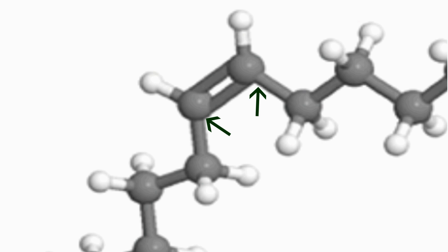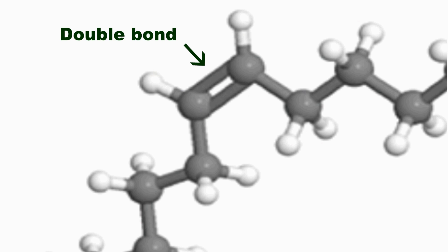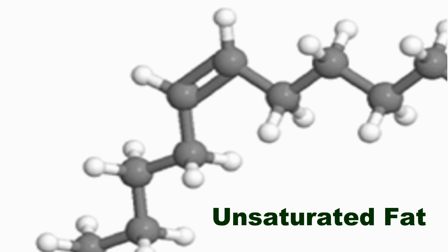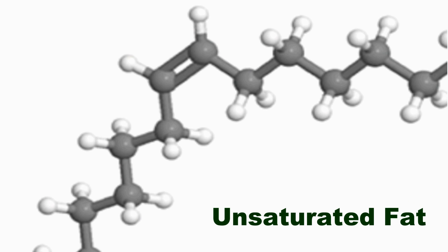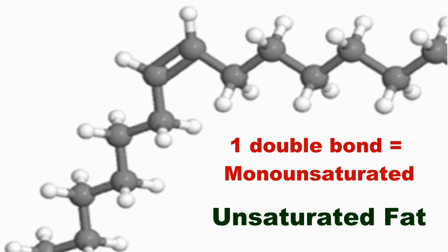Now if you take two hydrogens away from neighboring carbon atoms, those carbon atoms will be able to create a double bond between them. And this is what we refer to as an unsaturated fat, a monounsaturated fat.